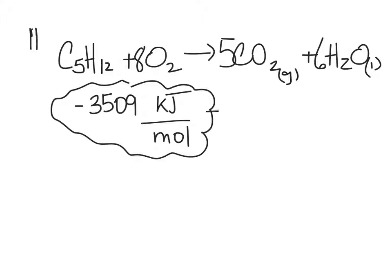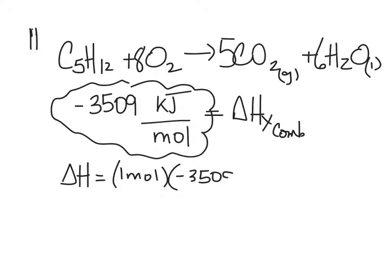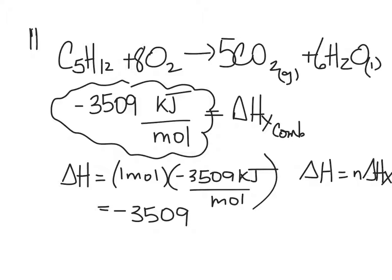That's our delta HX for what? Combustion of pentane. Yeah. All right. So, therefore, in this equation, in this chemical reaction, we have one mole of pentane times the molar enthalpy. Delta H reaction is equal to N delta HX. So, therefore, this reaction, as it's written, will release 3,509 kilojoules.